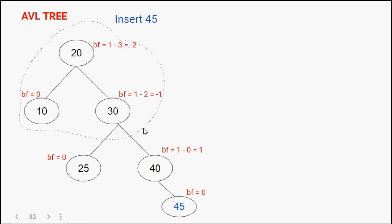This imbalance has occurred because of a right-right-right insertion. We are going to concentrate only on the three nodes creating imbalance. Why three nodes? Because a binary search tree node can have at most two children, so two children plus one parent gives three nodes. On these three nodes we will perform operations to make the tree balanced.